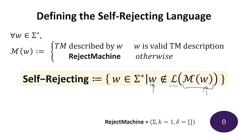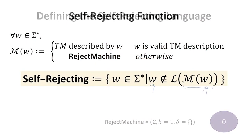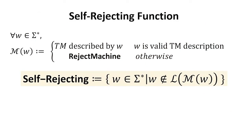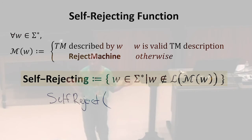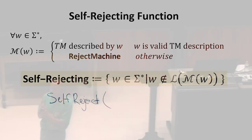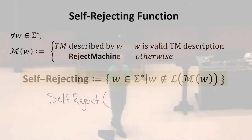We can also define this as a function. The language is the set of strings where the function outputs one. So what would the self-rejecting function look like? Its input is just a string — a finite binary string — like w here. And we need to figure out what its output should be.